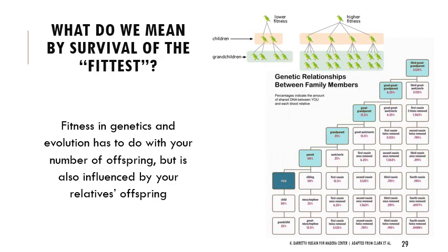When we talk about 'survival of the fittest' in natural selection, we're not talking about who has the most muscle or is tallest — we're talking about who reproduces. Fitness in genetics has nothing to do with physical appearance; it has to do with your number of offspring. It's also influenced by your relatives' offspring — if your cousin has eight children, that's roughly equivalent to you having one child in terms of genetic fitness, because we share DNA with our relatives.